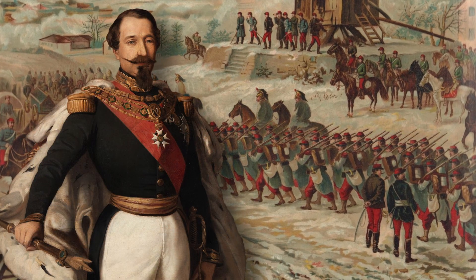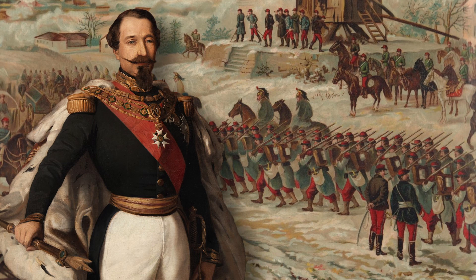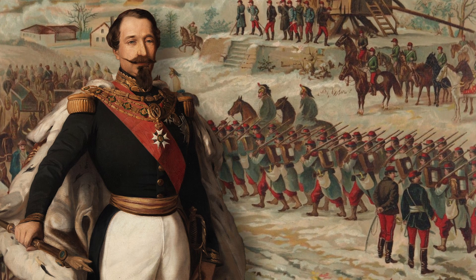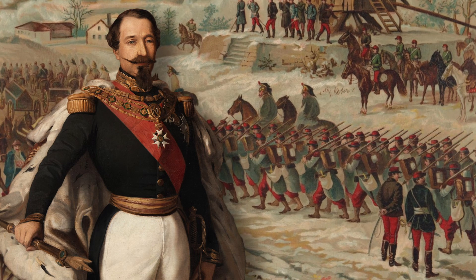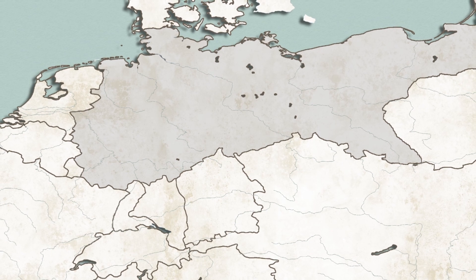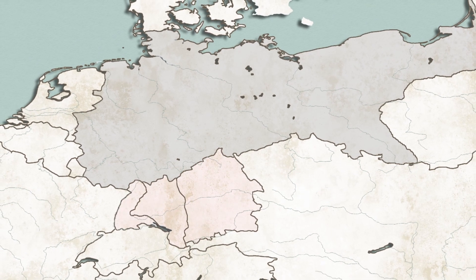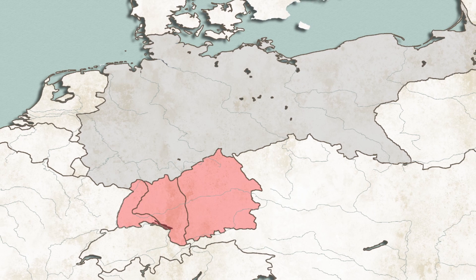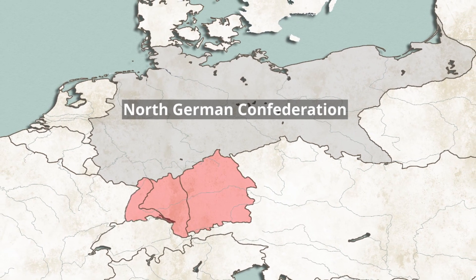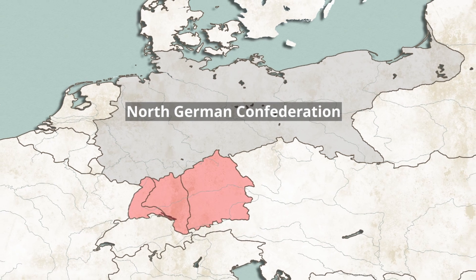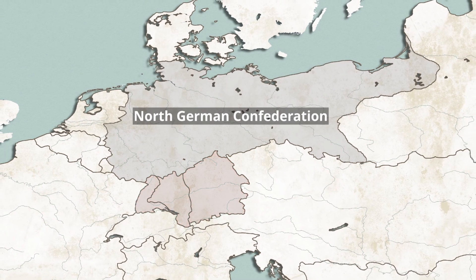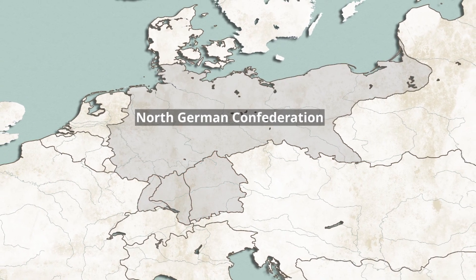Napoleon III declared war on Prussia on July 19th, 1870. His military advisers assured him that the French army could defeat Prussia, and that such a victory would restore his declining popularity in France. Bismarck, for his part, sought war with France as an opportunity to bring the South German states into unity with the Prussian-led North German Confederation and build a strong German empire. The Germans had superior numbers, since true to Bismarck's hopes, the South German states regarded France as the aggressor in the conflict and had thus sided with Prussia.